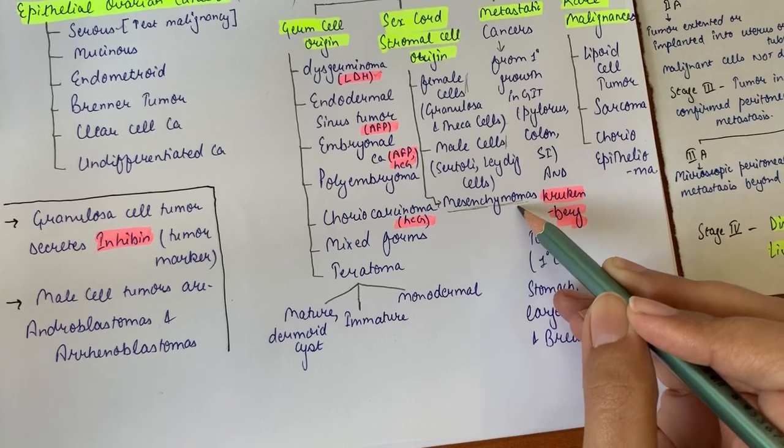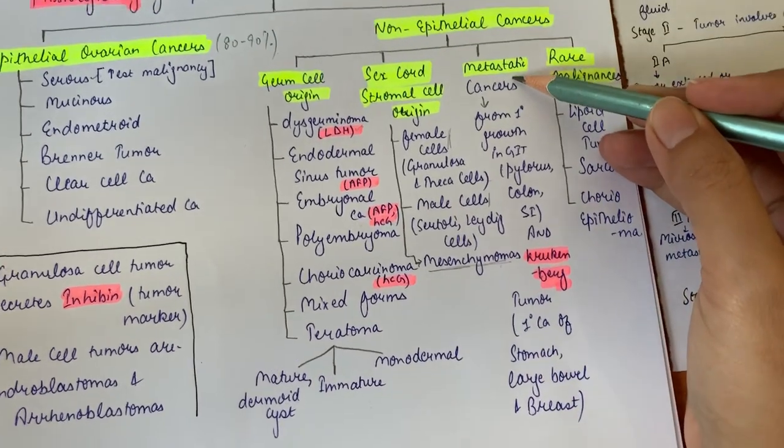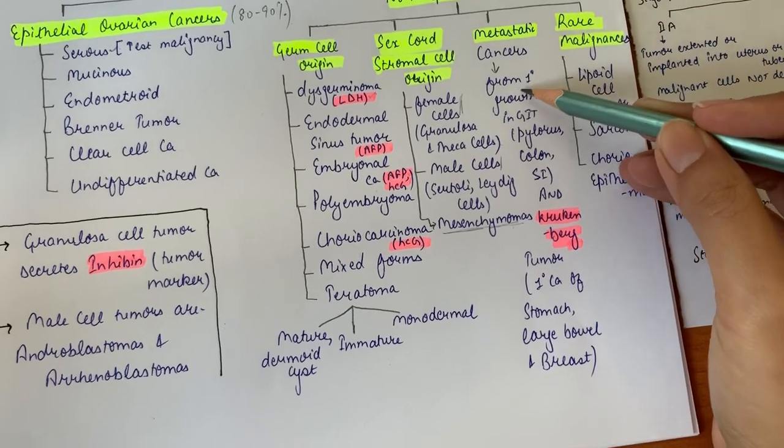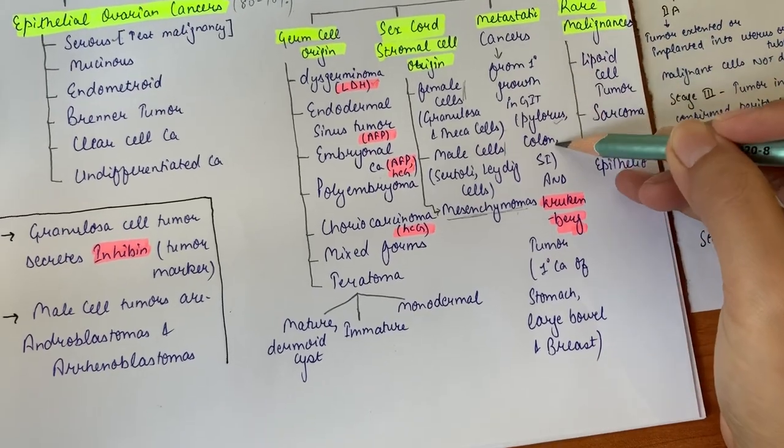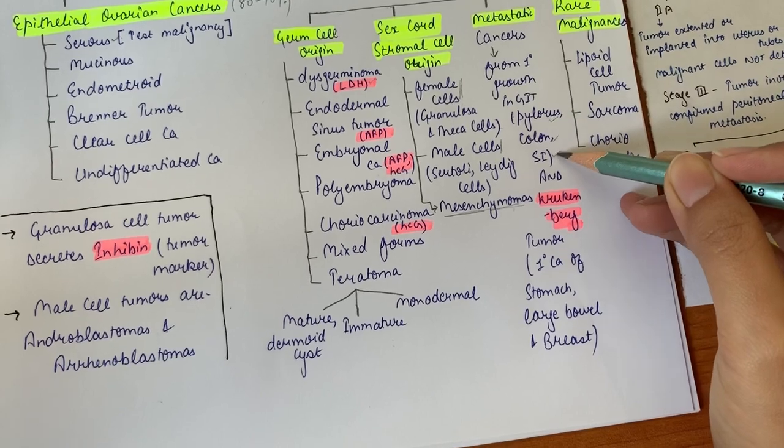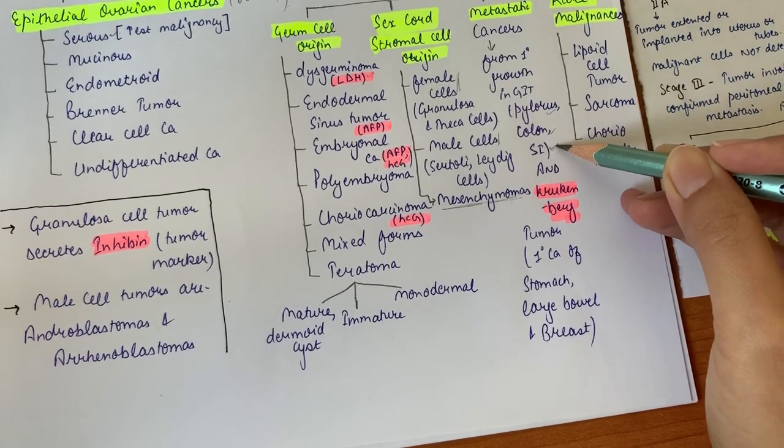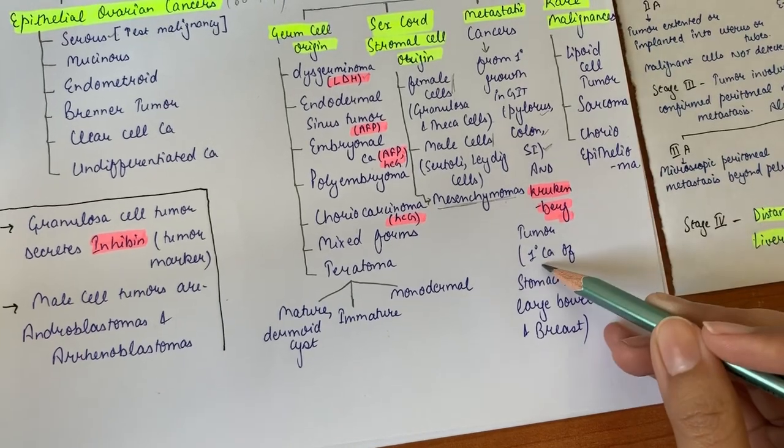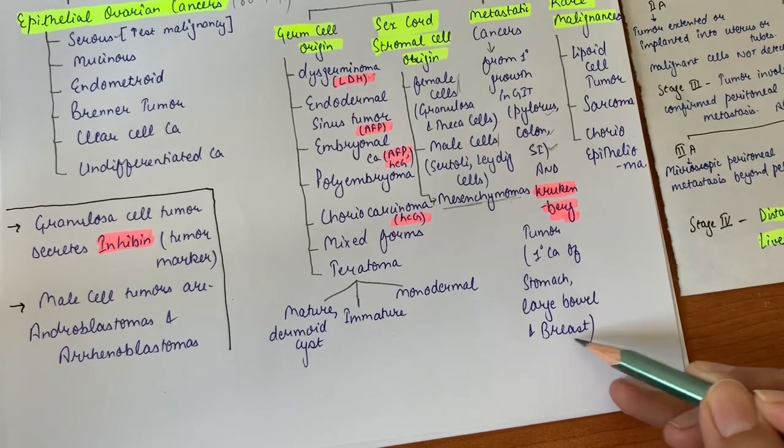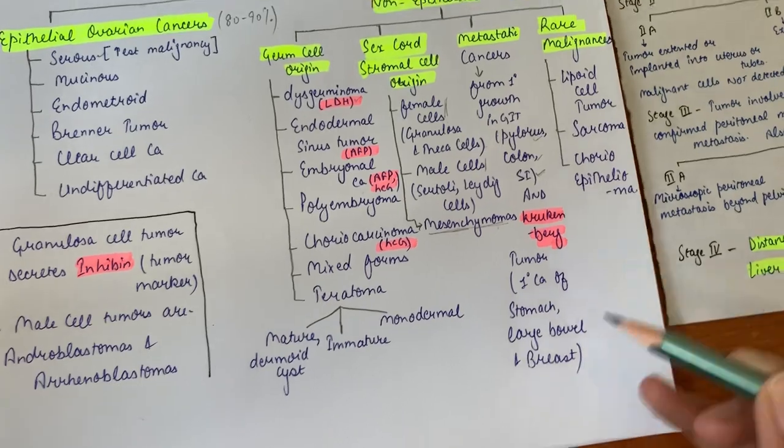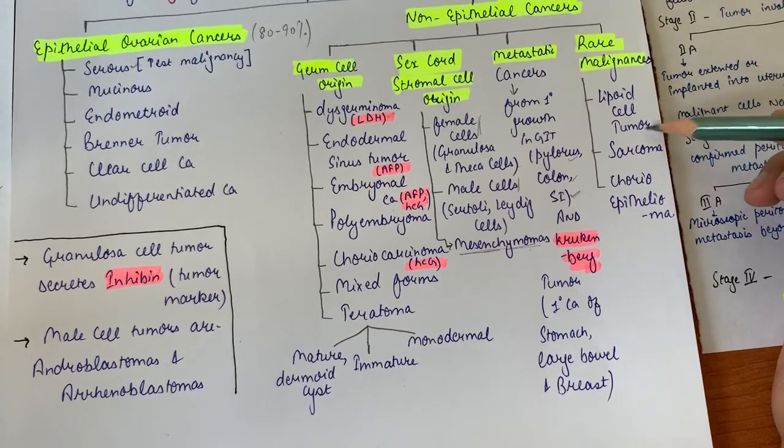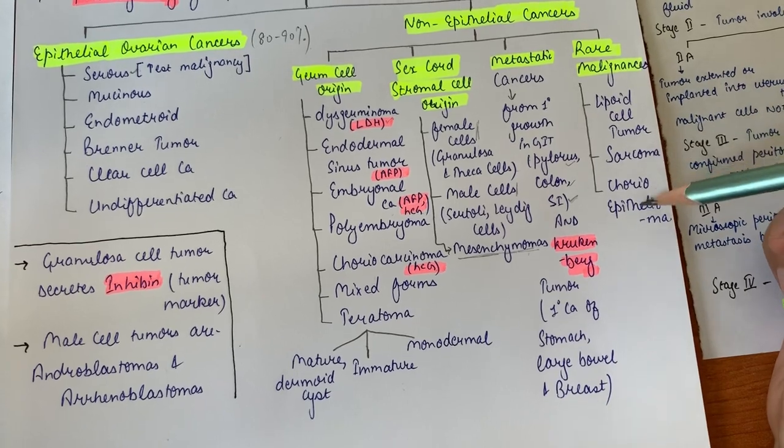Metastatic cancers - metastasis from various parts can occur in ovary from primary growth in GIT: pylorus, colon, and rarely small intestine. Small intestinal carcinomas can also metastasize in ovary. Important one here is Krukenberg tumor, which is primary carcinoma of stomach, large bowel, and breast that metastasizes to ovary. Rare malignancies seen here are lipid cell tumor, sarcoma which is very rare, and choriocarcinoma.